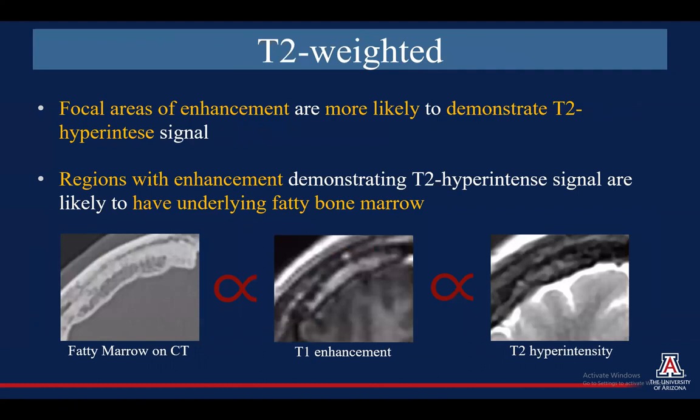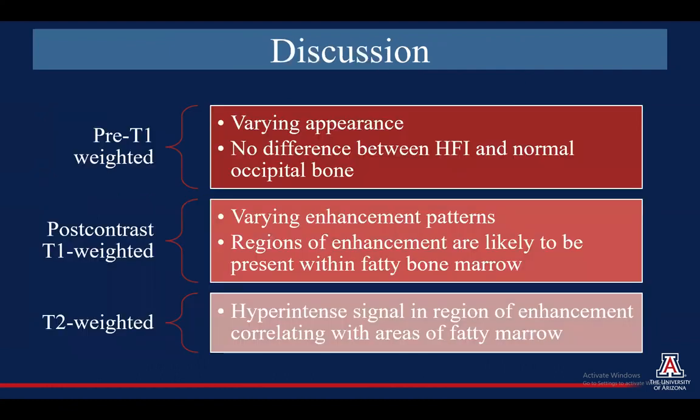For our T2 data, we found that focal areas of enhancement were more likely to demonstrate T2 hyperintense signal, and these regions of enhancement demonstrating T2 hyperintense signal were more likely to have underlying fatty bone marrow, which correlates with what we're seeing with the T1 images.